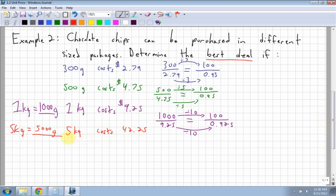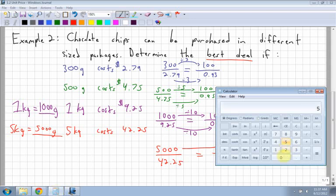Lastly, let's look at the last one here. I have 5 kilograms, which is 5,000 grams, and that's going to cost me $42.25. That's a lot of chocolate chips. And I need to figure out per 100, remember, because I'm comparing everything per 100. So how do I get 100 from 5,000? This one might be a little bit more difficult.